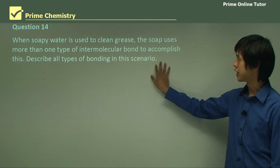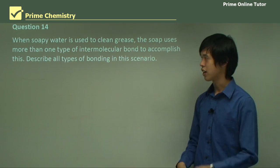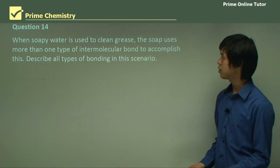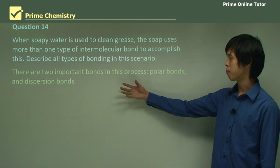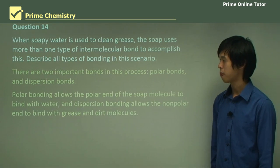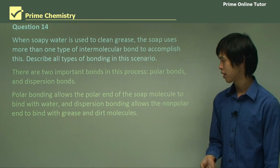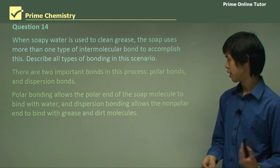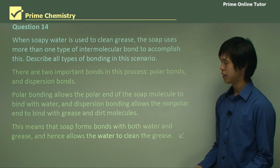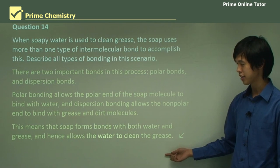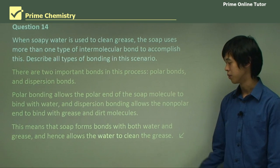When soapy water is used to clean grease, the soap uses more than one type of intermolecular bond to accomplish this. Describe all the bondings in this scenario. When we use soapy water to clean grease, there are two important bonds in the process: polar bonds and dispersion bonds. Polar bonding allows the polar end of the soap molecule to bind with the water. Dispersion bonding allows the non-polar end to bind with the grease and dirt. This means that soap forms bonds with both water and grease and hence allows the water to remove the grease or transport the grease somewhere else—in this case, clean.